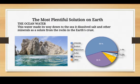Now, what is the most plentiful solution on Earth? We all know it is sea water — the ocean water. Our Earth mostly consists of ocean water. This water made its way down to the sea and dissolved salt and other minerals as solutes from the rocks in the earth. These rocks in the ocean contain minerals and salt.